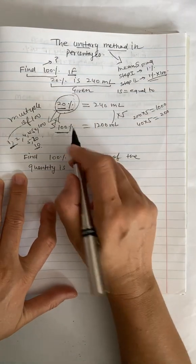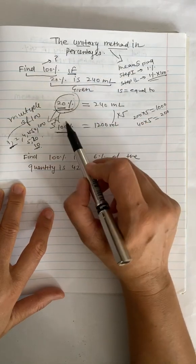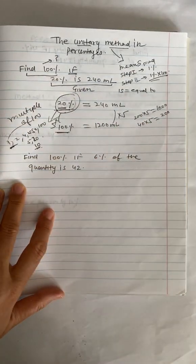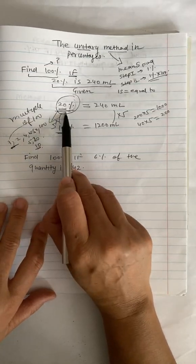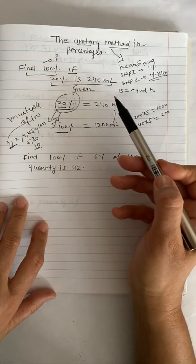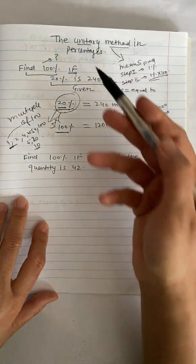In this case, I did not have to do 1%. The ultimate aim is to have the given information as a multiple of 100. In this case, it was given as a multiple of 100, then we didn't have to do the unitary method.